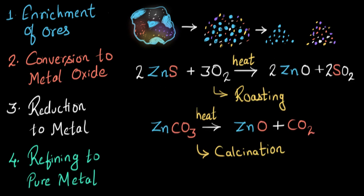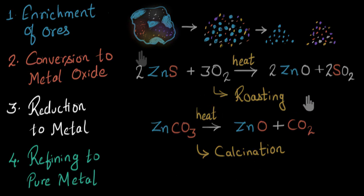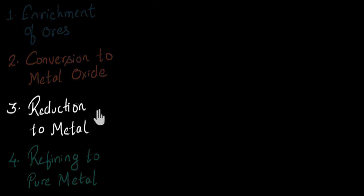And this is what happens in the second step. We saw that for sulfide ores, we use the process called roasting, whereas for carbonate ores, we use the process called calcination to convert them to oxides. Now, let's move to the next step, which is reduction to metal. After the second step, we got metal oxides. Now, we need to extract the metal out of this, meaning we need to remove oxygen. And removal of oxygen is called reduction.